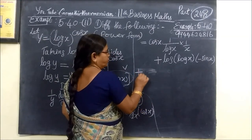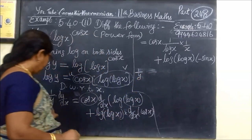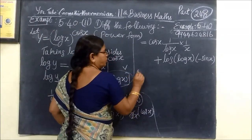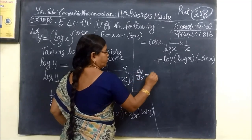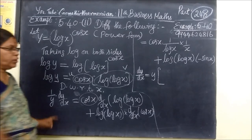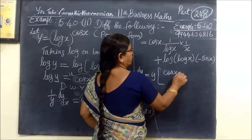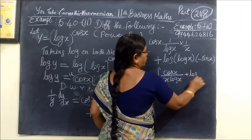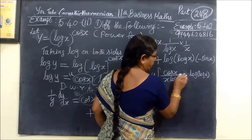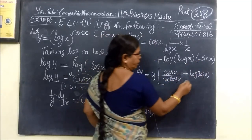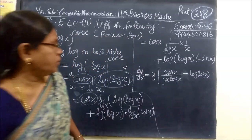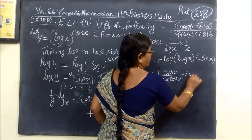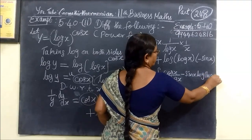So 1 by y — this y is going to the other side. The last step: you are multiplying y. So dy by dx equals y bracket. Then cos x by x log x — this is the denominator — plus log of log x. Then plus becomes minus: minus sin x, log of log x.